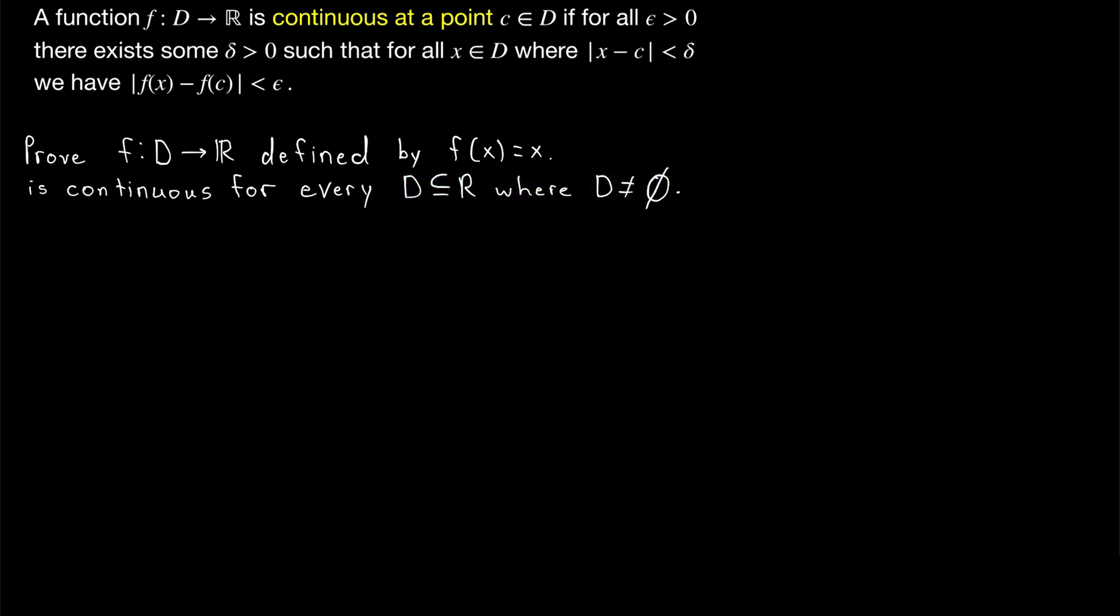The identity function takes an element from that domain D and sends it to itself in the real numbers. We want to prove that f is continuous, by which we mean continuous on its entire domain. Remember our epsilon delta definition of continuity is local. It's about continuity at a single point. So to prove that a function is continuous on its entire domain, we'll generally take an arbitrary point from the domain and show that the function is continuous at that point.